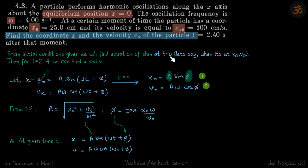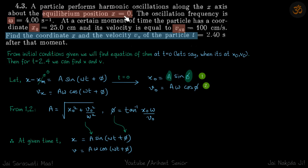From the initial conditions given, we'll find the equation of SHM. At t equal to zero, let's say the particle is at x-naught and its velocity is v-naught. Then for a general time — for example t equal to 2.4 — we can find x and v. The general equation for SHM is: x minus x-mean equals A sin(omega t plus phi). Since the mean position is x equal to zero, x-mean equals zero.